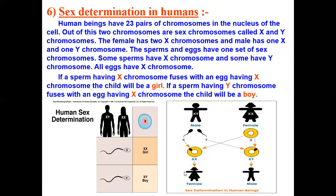Females have XX chromosomes, so the eggs released by females carry X chromosomes. During fertilization, if the sperm having an X chromosome fuses with the egg having an X chromosome, then XX chromosomes are formed and the child will be a girl.